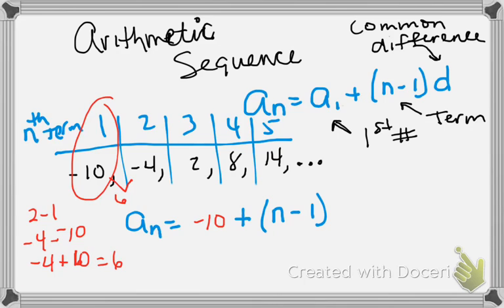So the difference here is 6. And if I add 6 to negative 4, I should get 2. If I add 6 to 2, I'm going to get 8. And if I add 6 to 8, I'm going to get 14. So my common difference is 6.